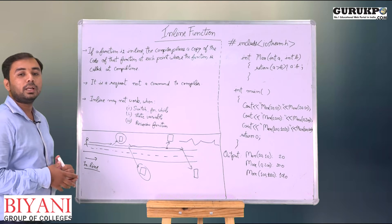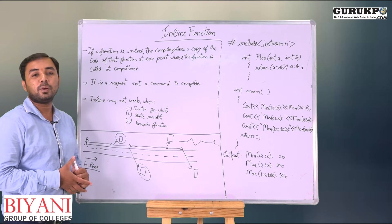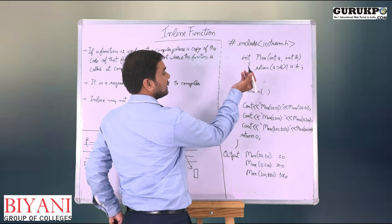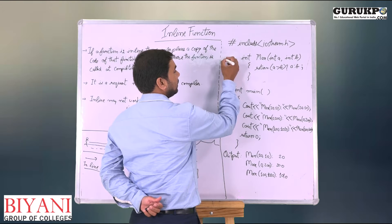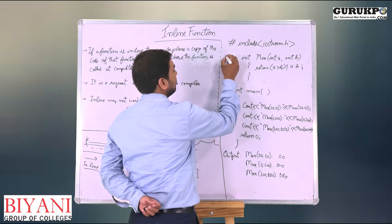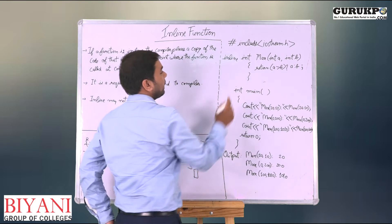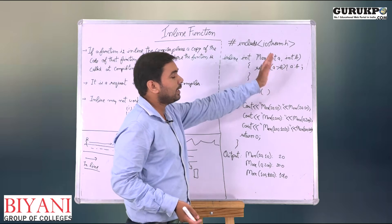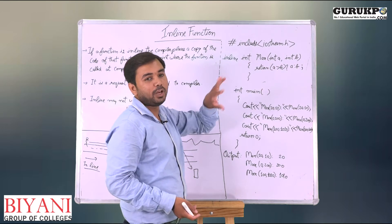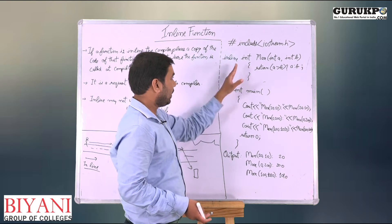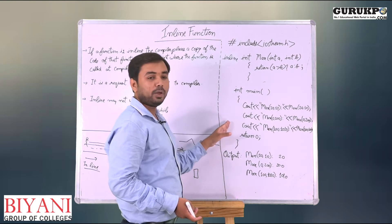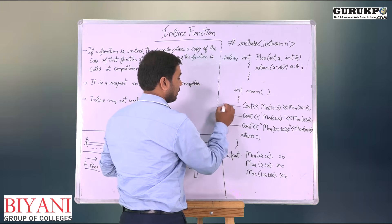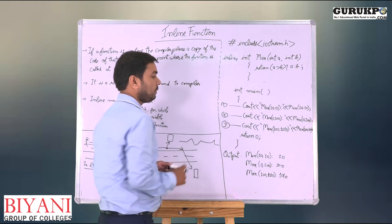To reduce this problem, C++ introduces the inline keyword. Basically it is a keyword placed in front of the definition of the function. Suppose in this program I have created a function called max. This max function returns the maximum integer value between 2 variables, and here I have a main function. In the main function I have called it 3 times: 1, 2, and 3.